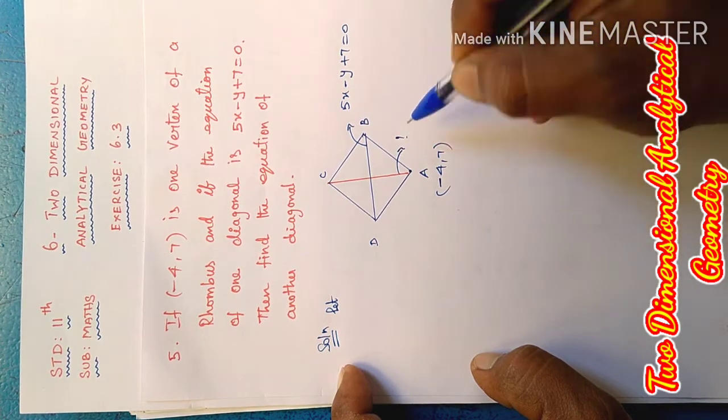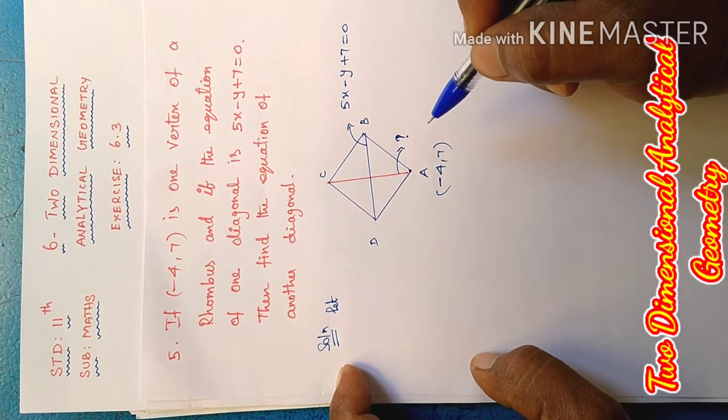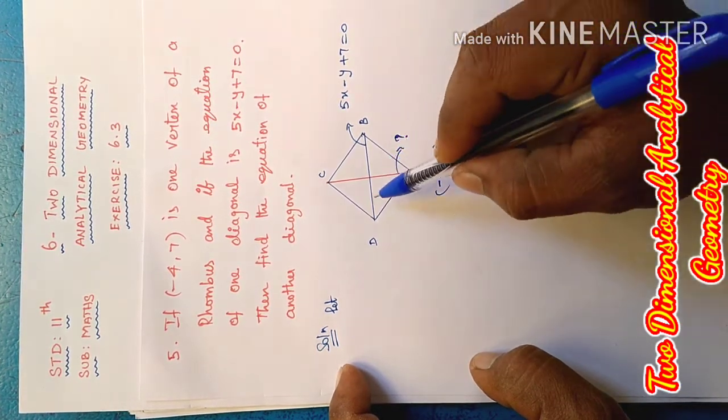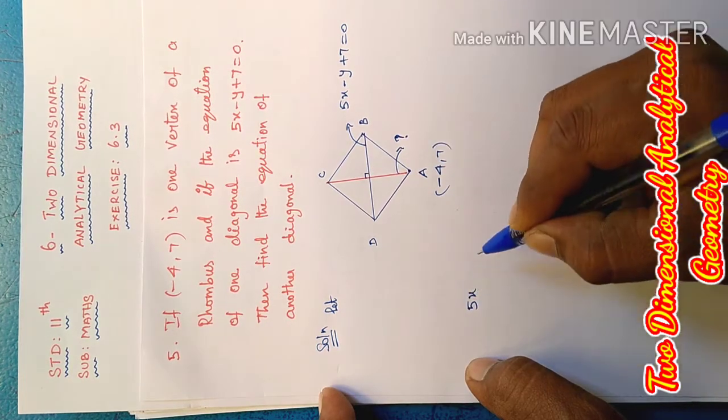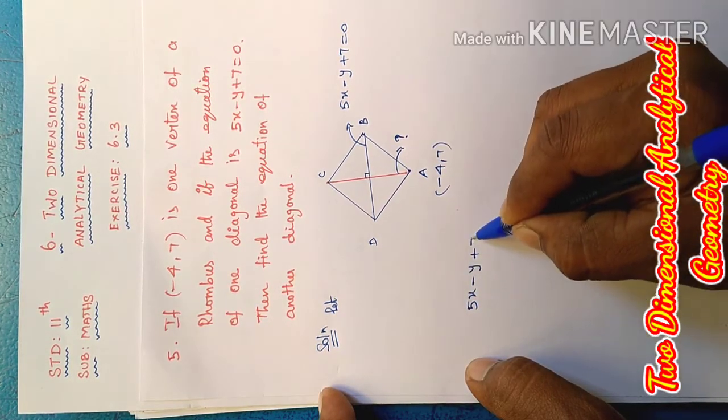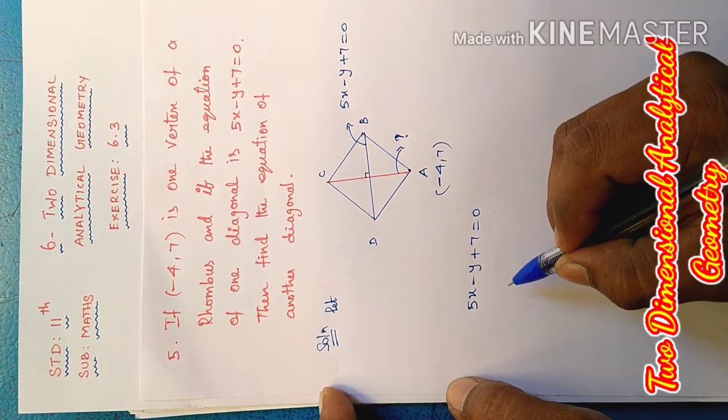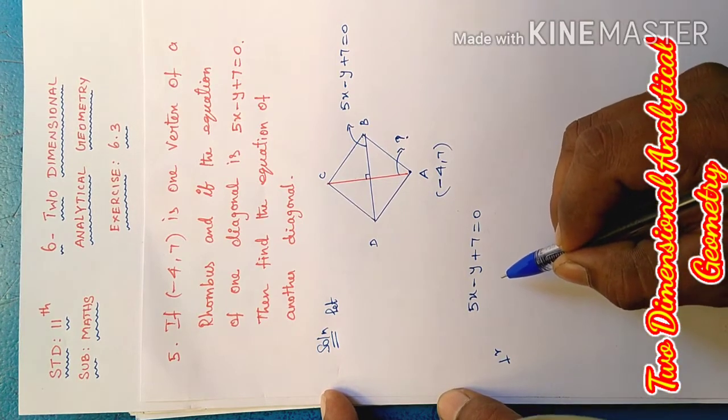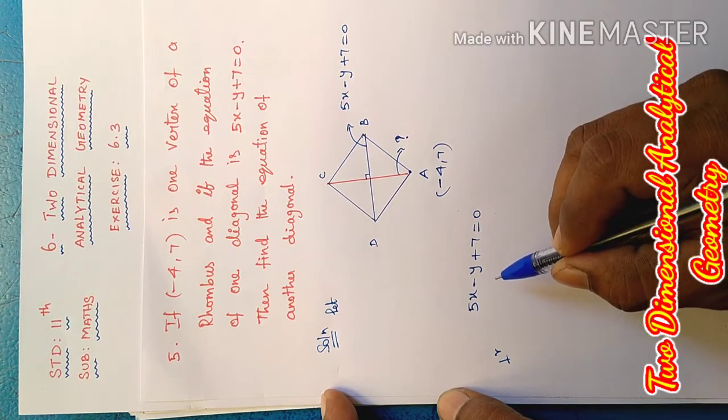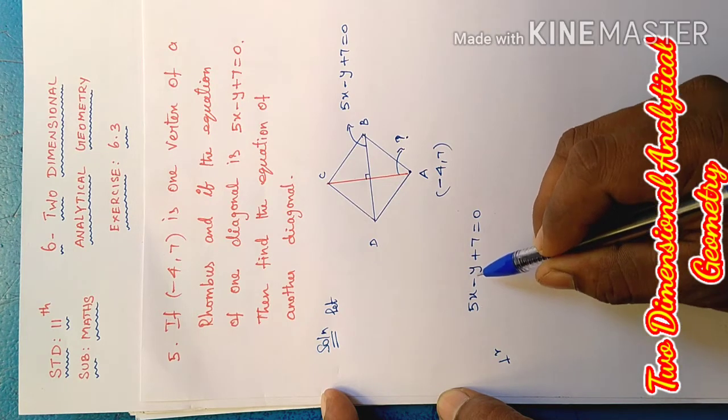So the point is, to find this another diagonal equation. The first diagonal's equation is 5x - y + 7 = 0. Another equation has three conditions. First condition: interchanging of the x and y coefficients. Change y coefficient 1 to x coefficient 5.